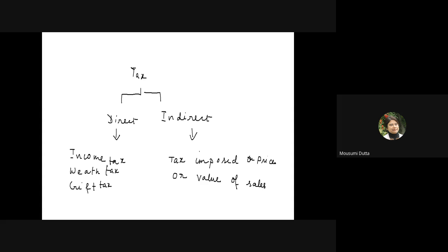Students who came from an economics background may know other mechanisms for collecting revenue apart from tax. The class is asked what other sources the government can earn from. Responses include fines and exports. The instructor confirms these and asks about the revenue side — what are the different sources of government income? One source is taxation.